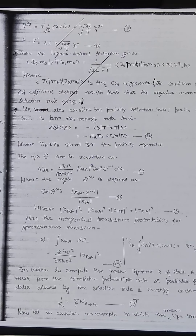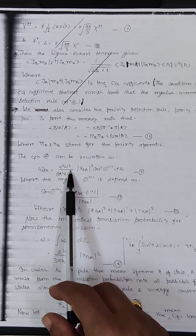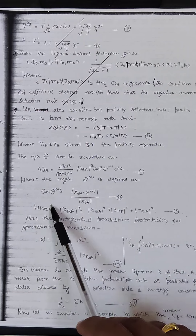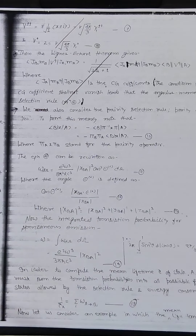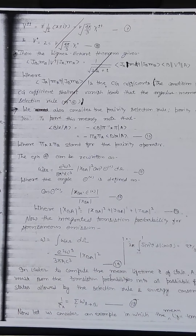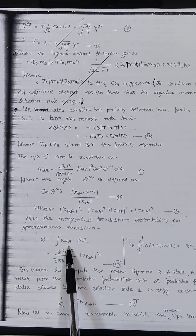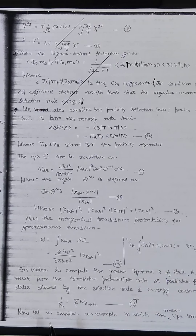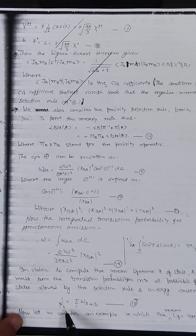The transition probability can be written as: dω = (e²ω³ / πℏc³) |x_{ba}|² cos²θ_α dΩ, where the angle θ_α is defined by cos θ_α = (x_{ba} · ε_α) / |x_{ba}|, and |x_{ba}|² = |x_{ba}|² + |y_{ba}|² + |z_{ba}|². The integrated transition probability for spontaneous emission is: ω = e²ω³ / (3πℏc³) · |x_{ba}|².